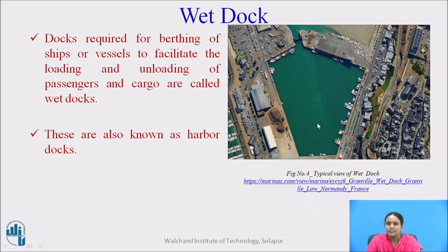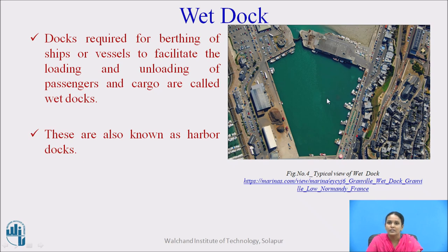The dry dock is constructed near the water surface where harbors are located. The open end of the chamber is provided with a gate and acts as an entrance to the dock. The wet dock is also used for berthing of ships or vessels to facilitate the loading and unloading of passengers and cargo. These are also known as harbor docks.